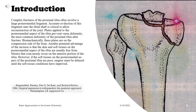Biomechanically, these plates are on the compression side of the bone. Another potential advantage of the incision is that the skin and soft tissues on the postero-medial aspect of the tibia are usually free from blisters that commonly occur on the anterior portion of the tibia.